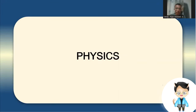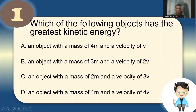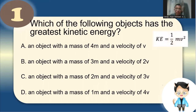Now let's have physics. Number one: Which of the following objects has the greatest kinetic energy? We have the following choices: mass of 4m and velocity v, mass of 3m and velocity 2v, mass of 2m and velocity 3v, and mass of 1m and velocity 4v. We need to find the greatest kinetic energy using the formula KE = ½mv².